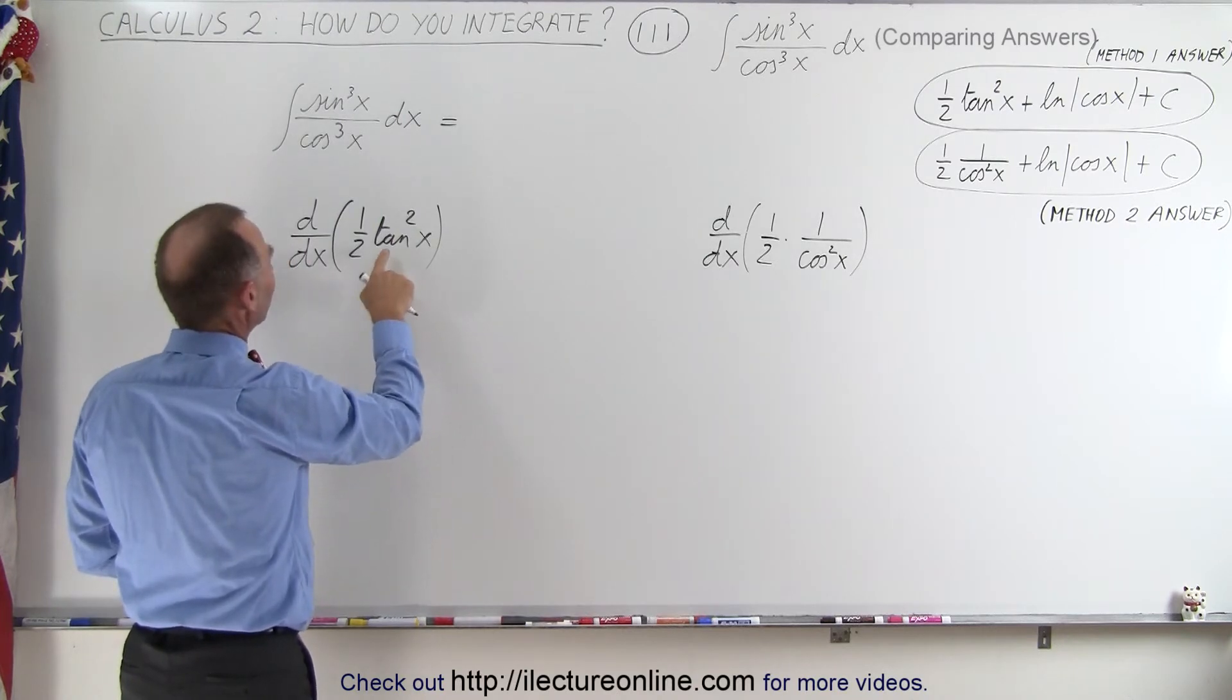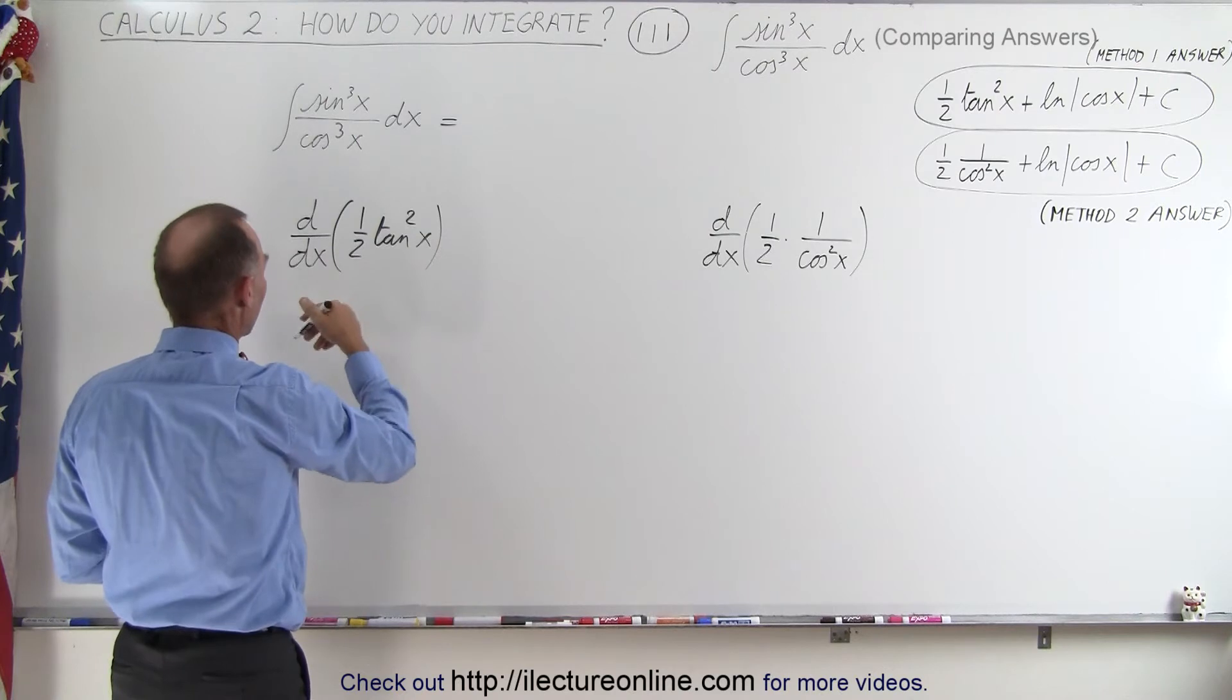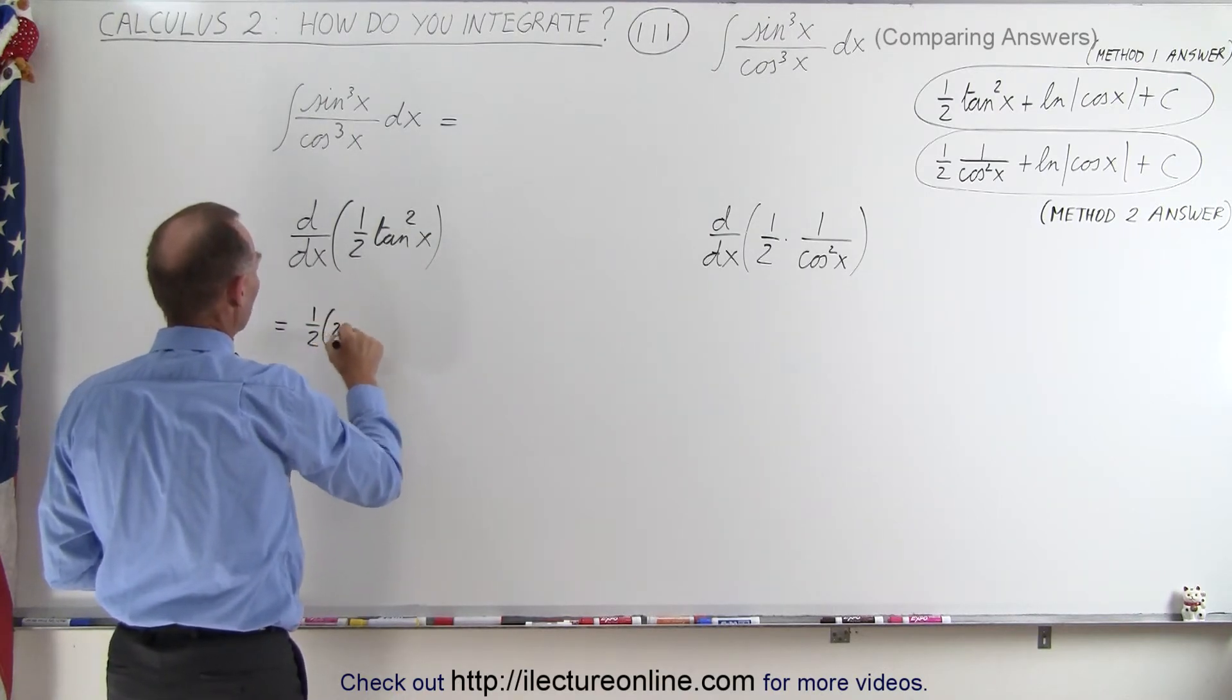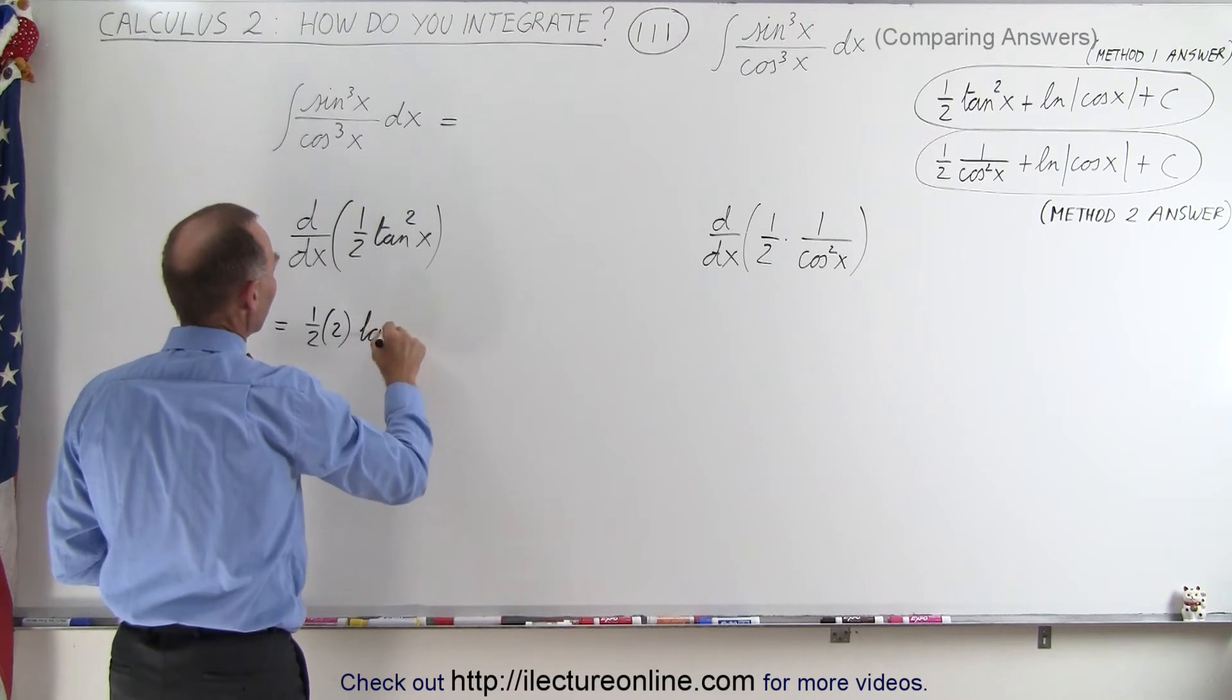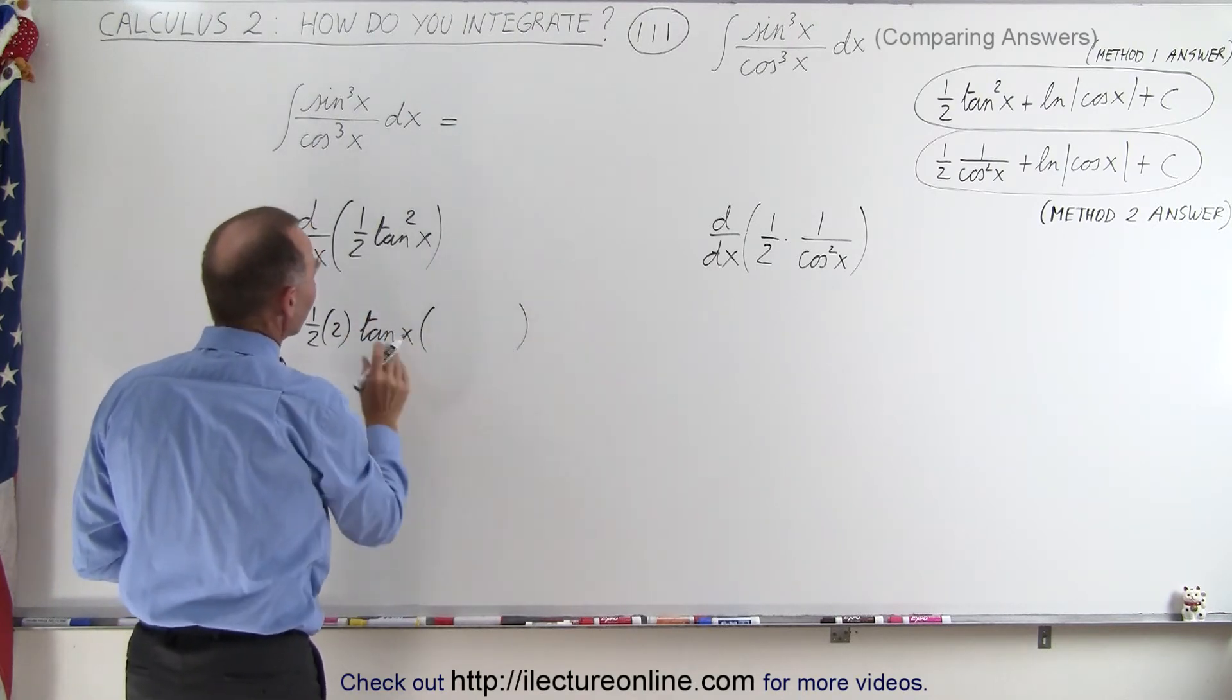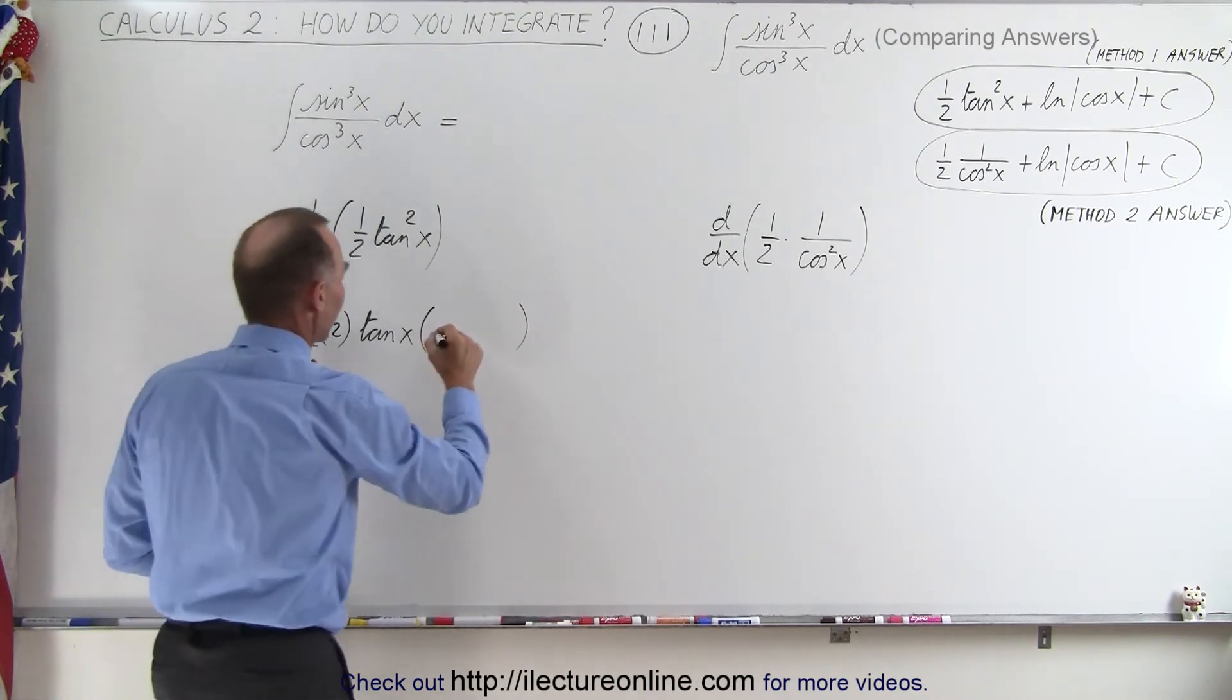So here we have one half times the tangent squared of x. So what we can do here is we can use the power rule first. So this becomes equal to one half times two times the tangent to the first power of x times the derivative of the tangent of x and the derivative of the tangent of x is equal to the secant squared of x.